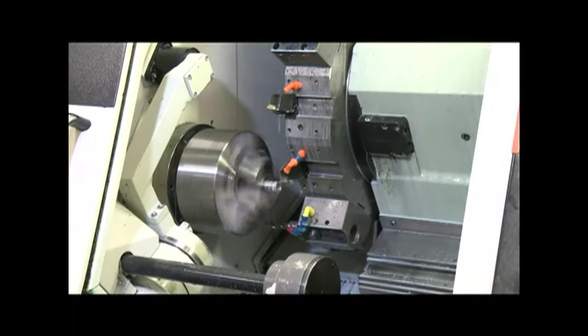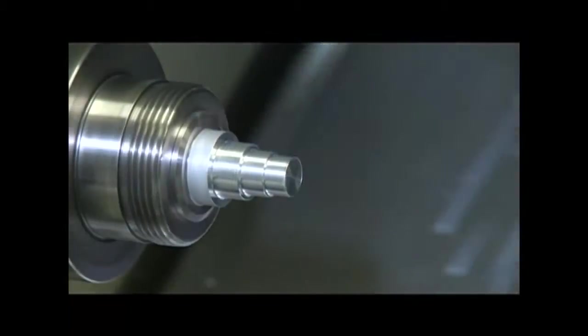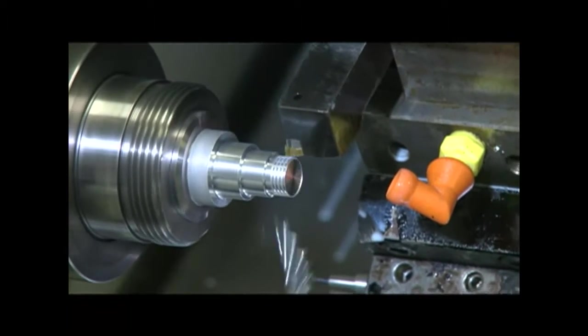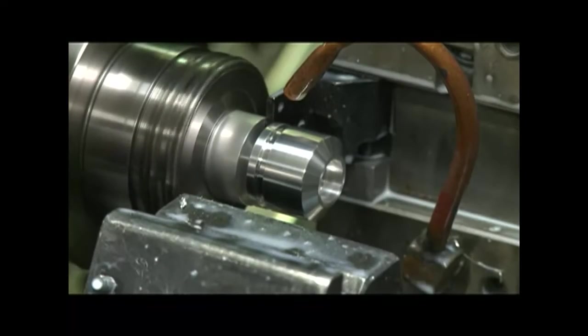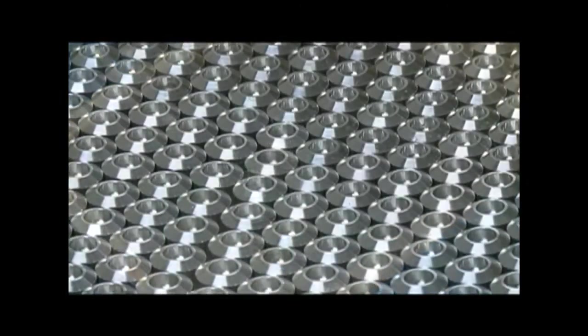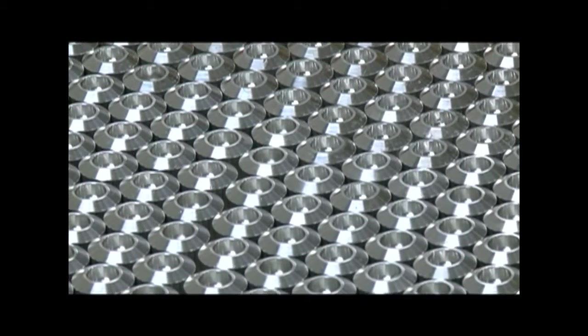Some of the smaller CNC lathes have bar feeders that can handle a 12 foot bar, while others use a magazine feed system that loads shorter bars. These machines also have programmable parts catchers coupled with the bar feeders. They provide for unattended operation when the process permits.